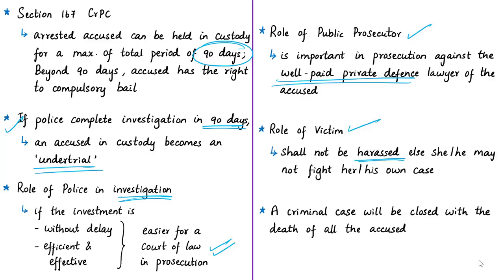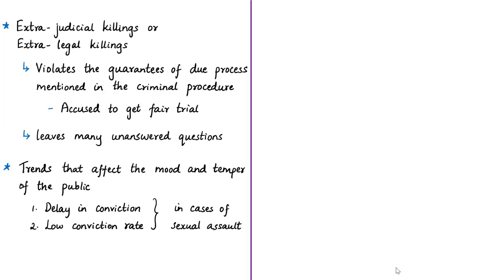Once an accused dies, the case must be closed, since there is no one left to punish. Academicians have noticed a trend where in extrajudicial killings, all accused in a particular criminal case are killed, thereby automatically closing the case. This means no further investigation, charge sheet, or trial is required. Notably, in the recent alleged Hyderabad encounter, all four accused were killed.